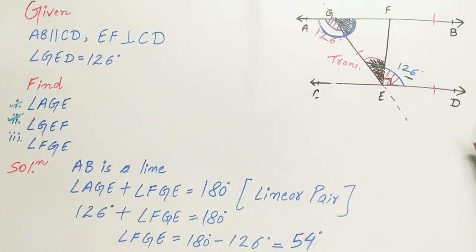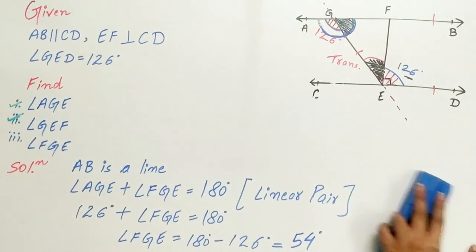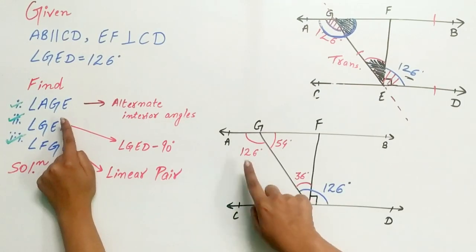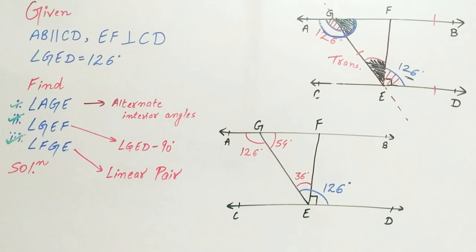Hence we found the values of all three angles. Now a quick recap. Angle AGE is equal to 126 degrees. Note it down.